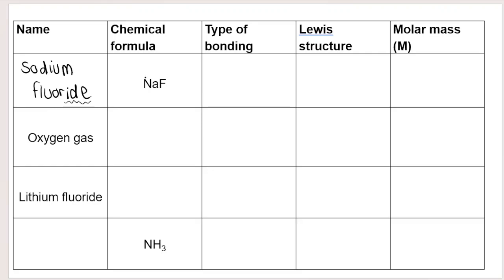Type of bonding: we decide that by looking at the elements. Sodium is a metal, as I've already mentioned, and fluorine is a non-metal. You need to know that metal and non-metal means ionic bonding. Ionic bonding is between a metal and a non-metal.